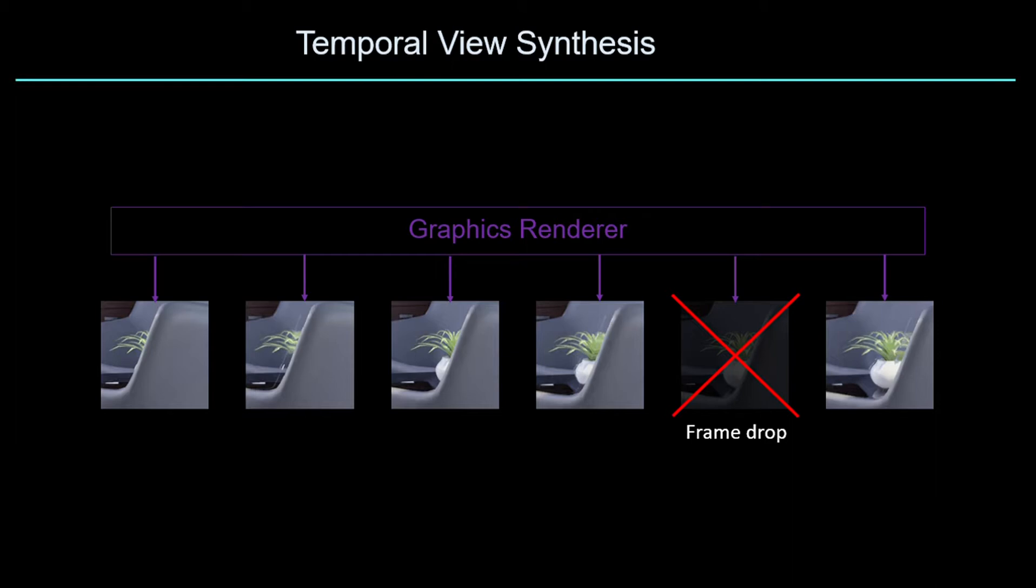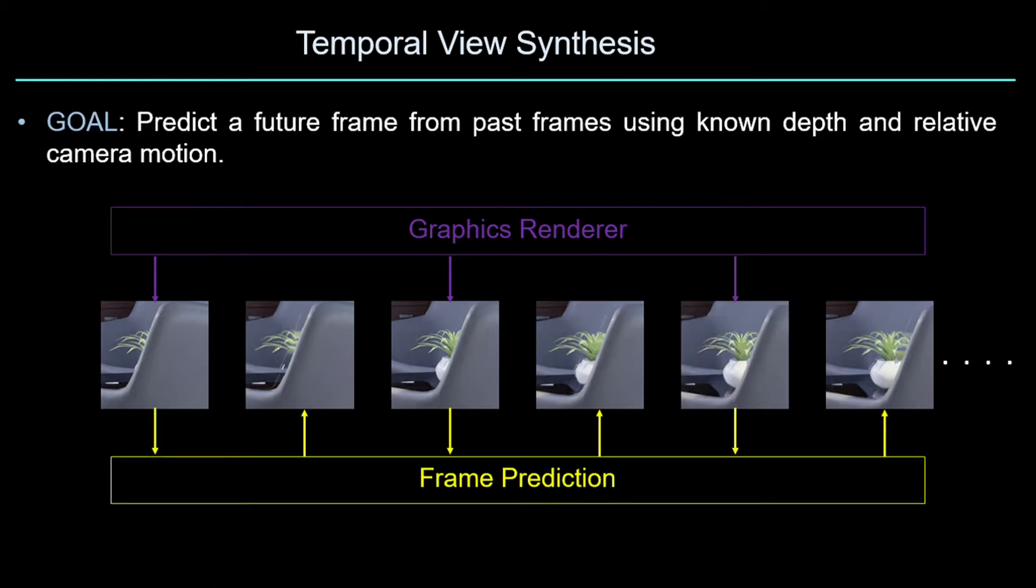So instead of rendering all the frames, the frames can alternatively be rendered and predicted by a frame prediction algorithm. We refer to this problem of predicting the next frame from the past frames using the updated camera or head pose as temporal view synthesis.